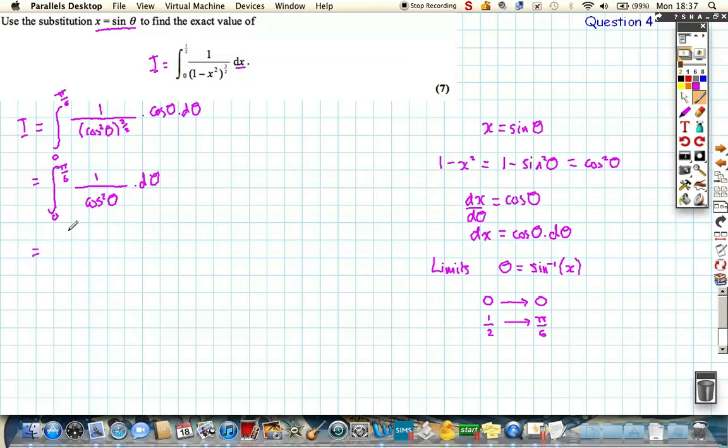which is really, well, 1 over cos squared, remembering all of our trigonometric identities, is really just sec squared theta d theta.